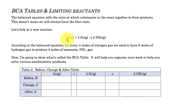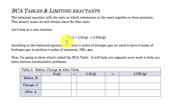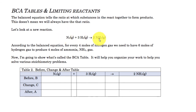For every one mole of nitrogen, we react with three moles of hydrogen to produce two moles of ammonia. The balanced equation shows us the ratio at which these substances interact. Every time we have one mole of N₂, we need three moles of H₂, and every time we have that ratio, we always produce two moles of NH₃ as the product.